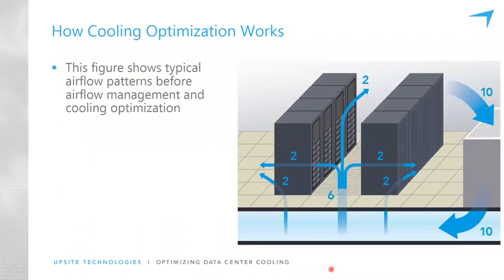Here are some images that might help you understand the concept of bypass airflow. It seems like a simple concept but it's commonly misunderstood. In the following images, we have a simple room with one cooling unit and two rows of cabinets. These could represent a large room with many cooling units and many rows of cabinets — the ratios of the airflows all still apply.